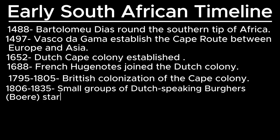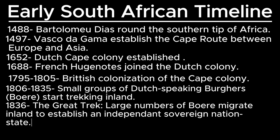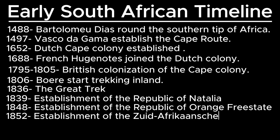Between 1806 and 1835 smaller groups of the Boer folk moved inland, and from 1836 a large number decided to migrate inland to establish an independent sovereign nation state — this trek was named the Groot Trek or the Great Trek. The Boers then established the Republic of Natalia, the Republic of the Orange Free State, and the Zuid-Afrikaansche Republiek, also known as the Republic of Transvaal.